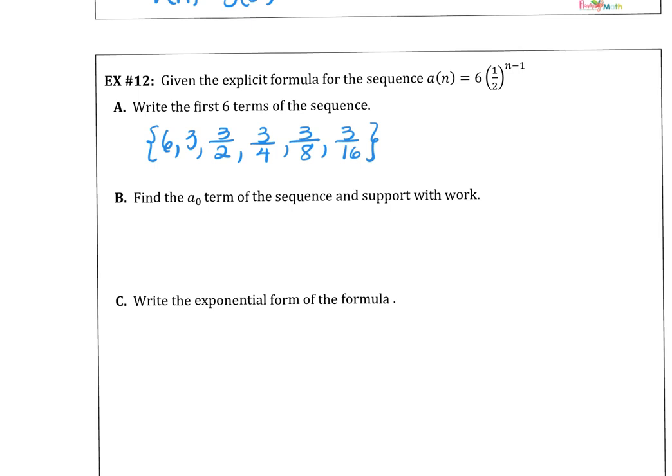How can we find the a sub 0 term in the sequence and show our work to support that? Well, a sub 0 is going to be 6 times 1 half to the 0 minus 1 power. So a sub 0 is 6 times 1 half to the negative 1 power. That gives us a sub 0 is 12.